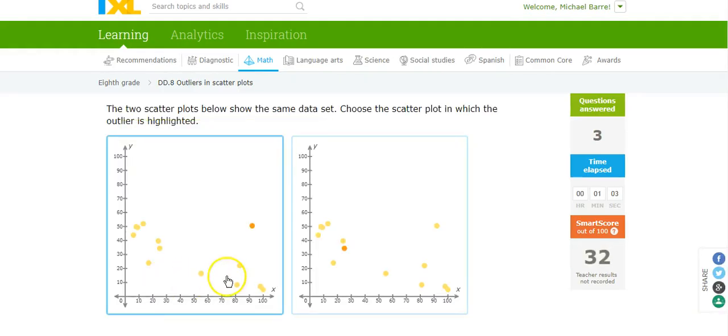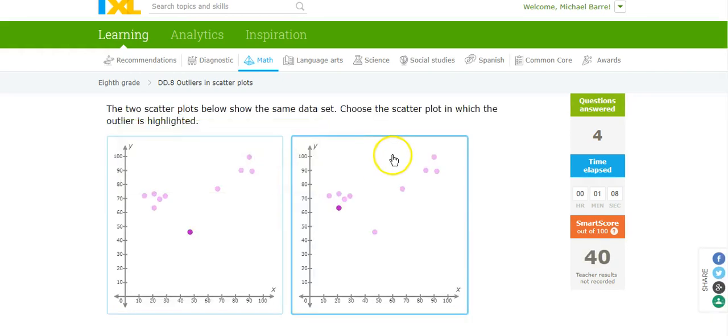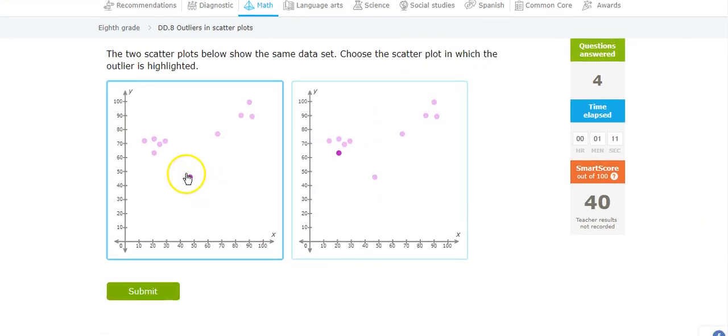Let's see the outlier here. This guy's in with other points. This one's off by itself, so there's the outlier. Here's the outlier off by itself. This one's in with other points.